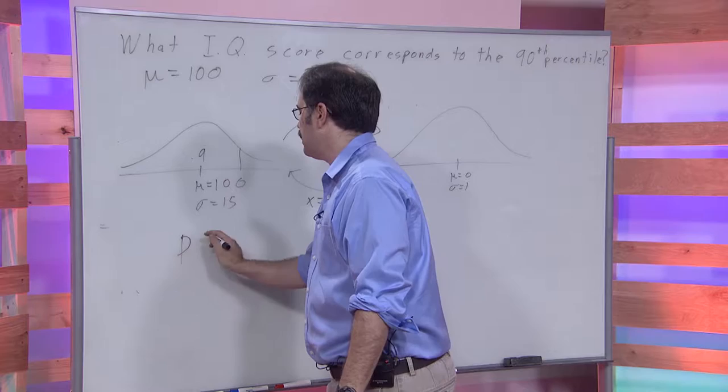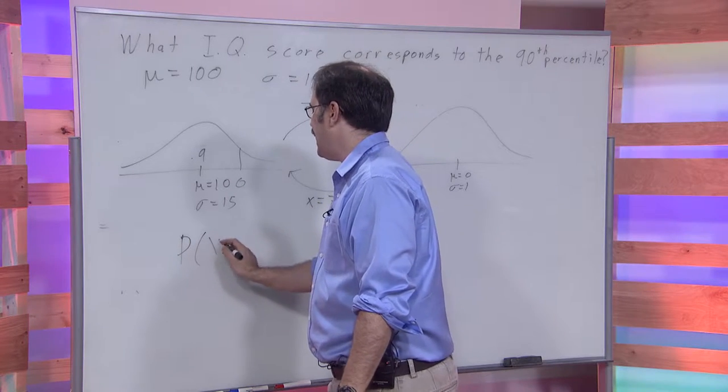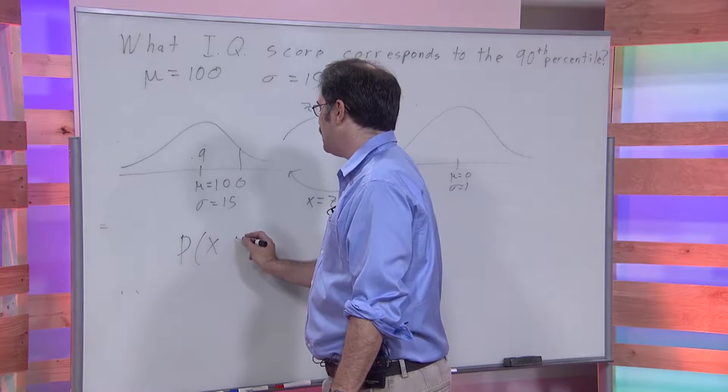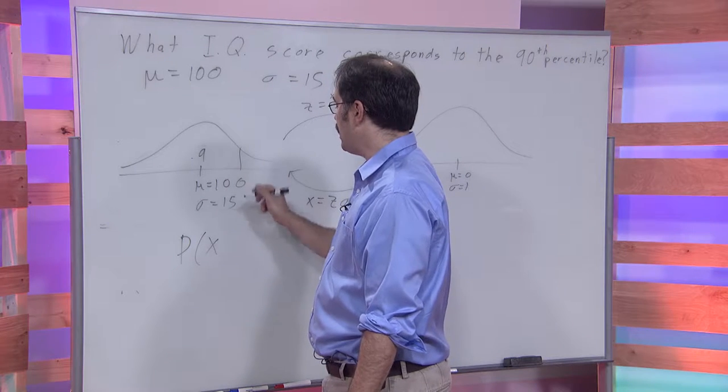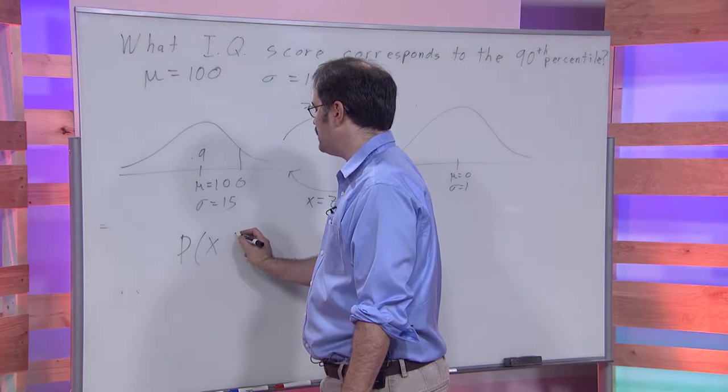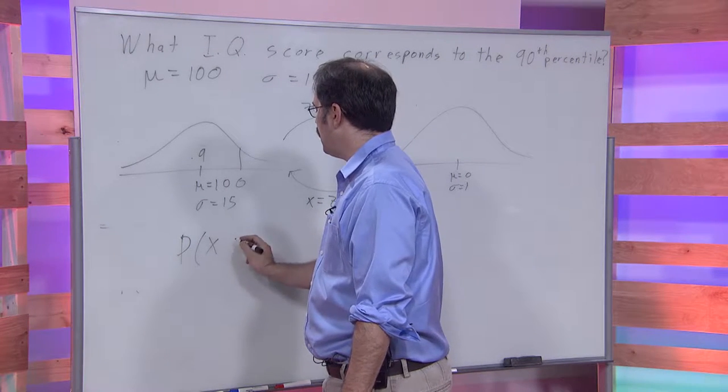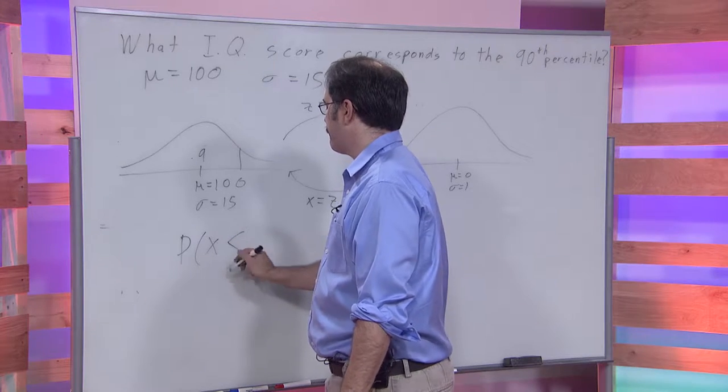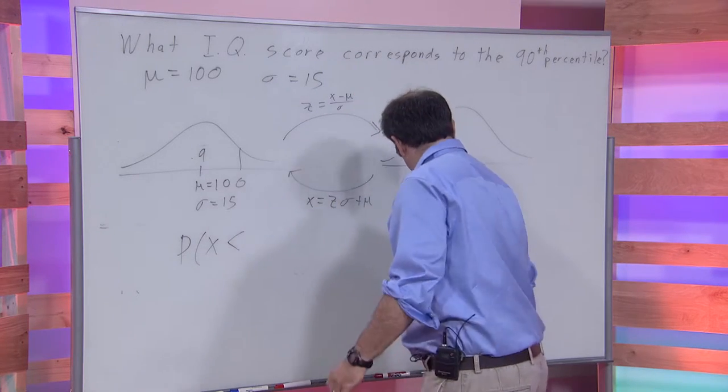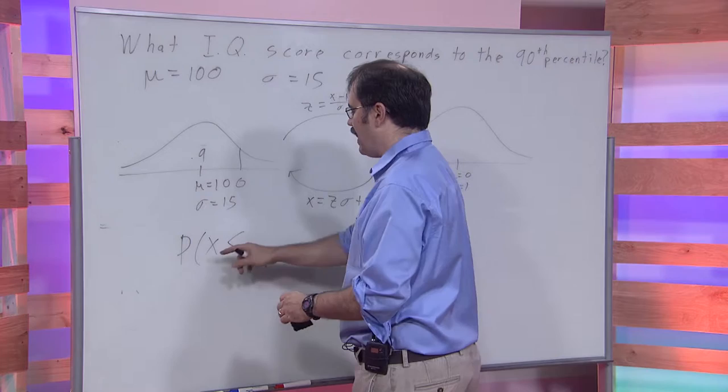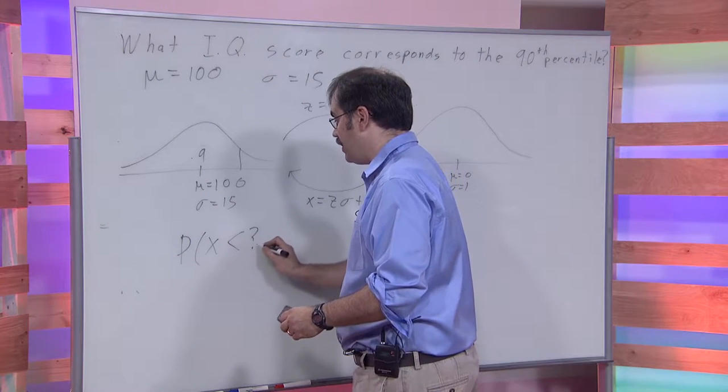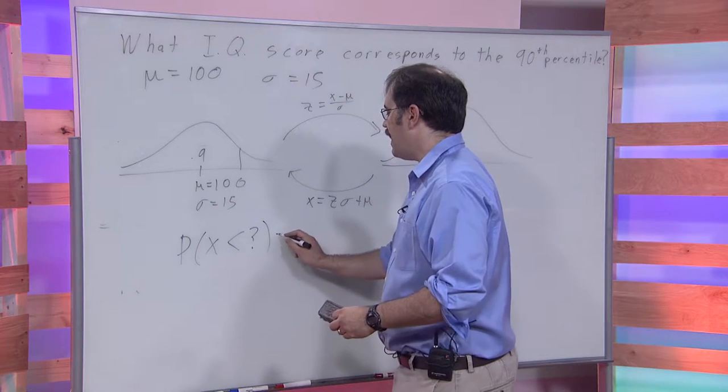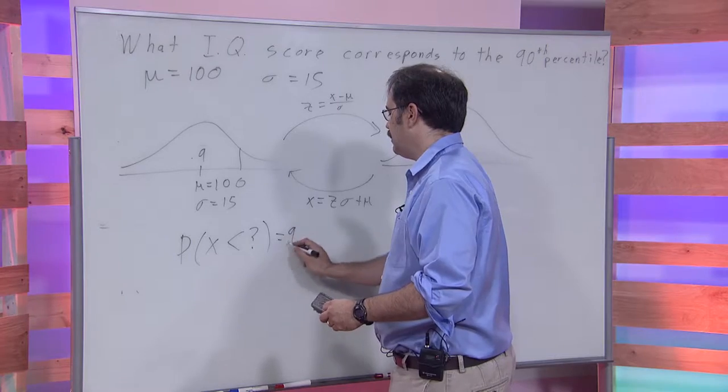So what's the probability that we're going to get an x value, and remember with continuous random variables, it doesn't matter if we use less than or less than or equal to. We want the probability that x is equal to some value. We don't know what it is. We want that to be 0.9.